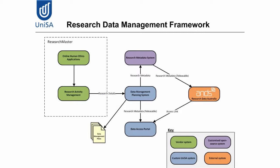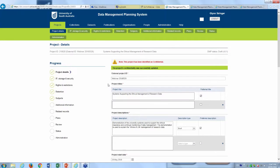Research details are passed through to their data management planning system, and then metadata is passed to their research metadata system, which in turn puts information up to Research Data Australia. Importantly, only releasable metadata is passed — researchers may have information they don't want to share until their project is complete. They also have a data access portal linked to Research Data Australia for open data.